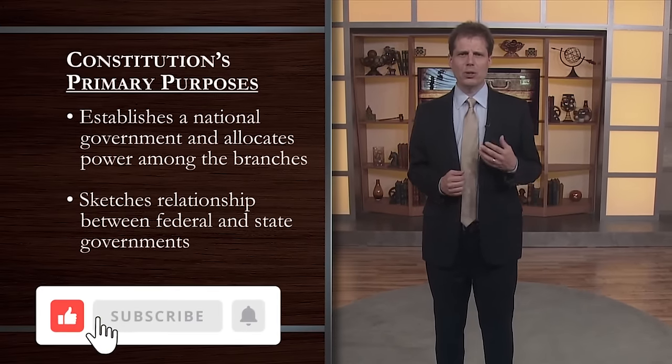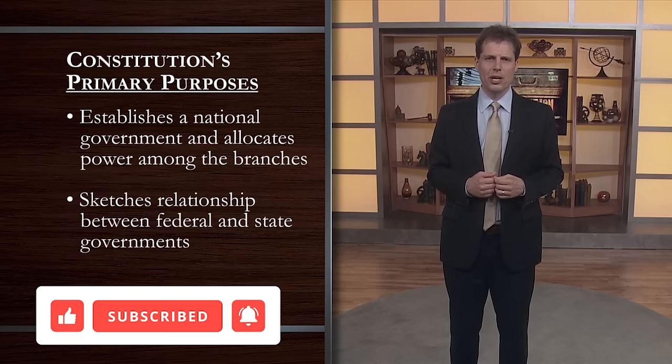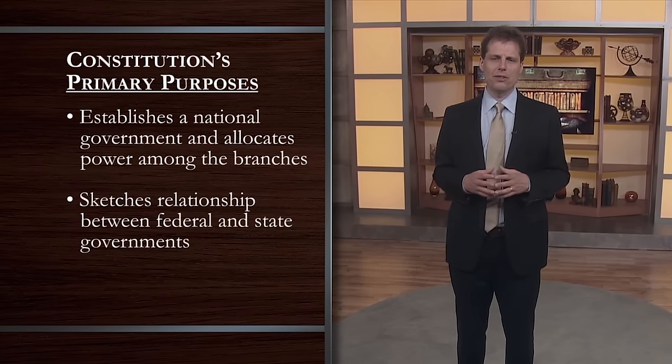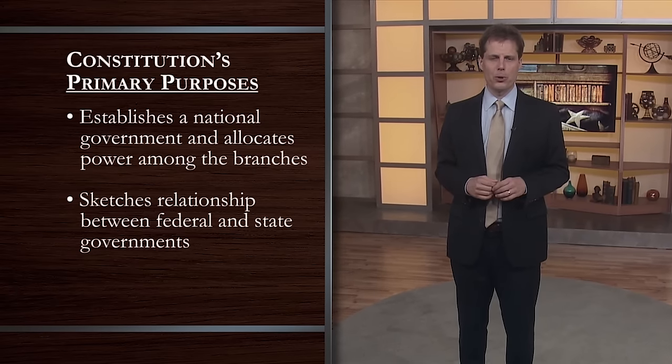For example, to enact a law, both houses of Congress must pass a bill and the president must sign it, unless the legislature is able to override an executive veto by a supermajority. And if Congress enacts a criminal law, enforcement requires prosecution by the executive branch and conviction within the judiciary. A second thing the Constitution does is sketch the relationship between the federal and state governments. Ours is a federalist system, meaning that we have two kinds of governments — national and state — with jurisdiction over the same territory. Under the Articles of Confederation, power resided almost entirely within the states, but the framers recognized that certain governmental functions could be performed much better by one central government.